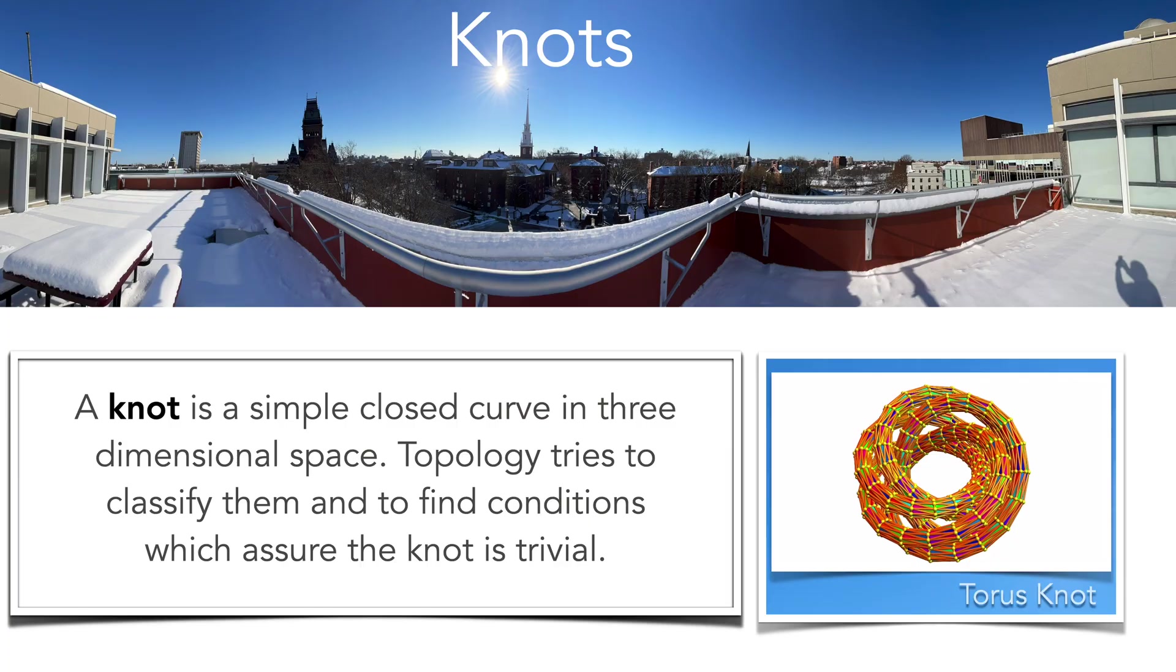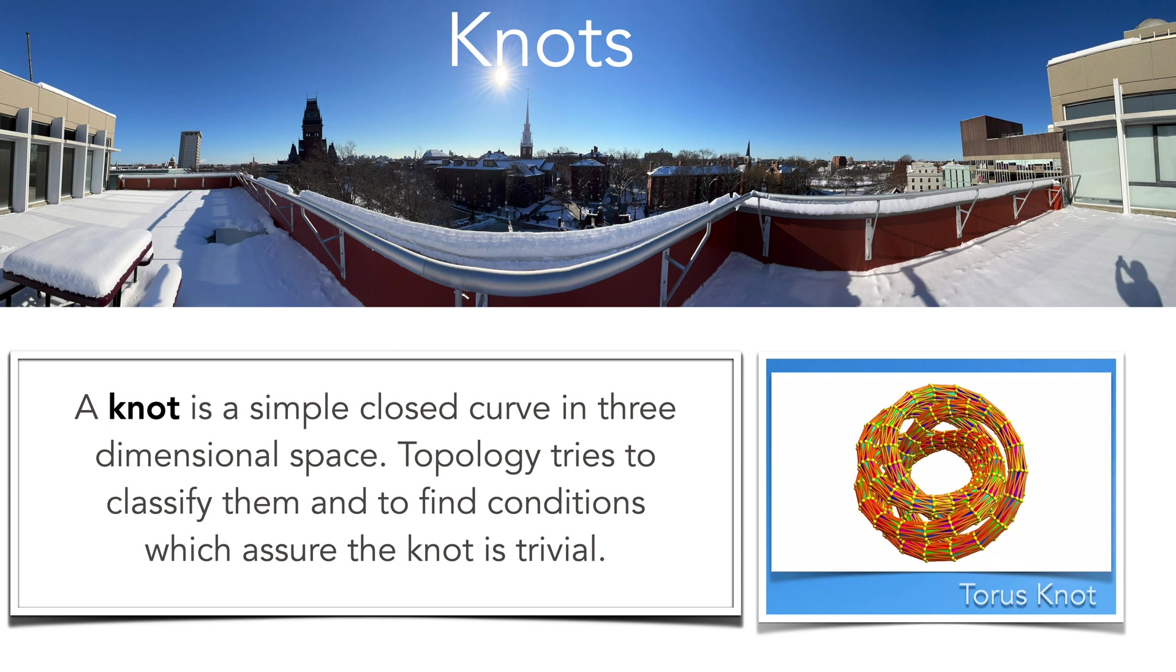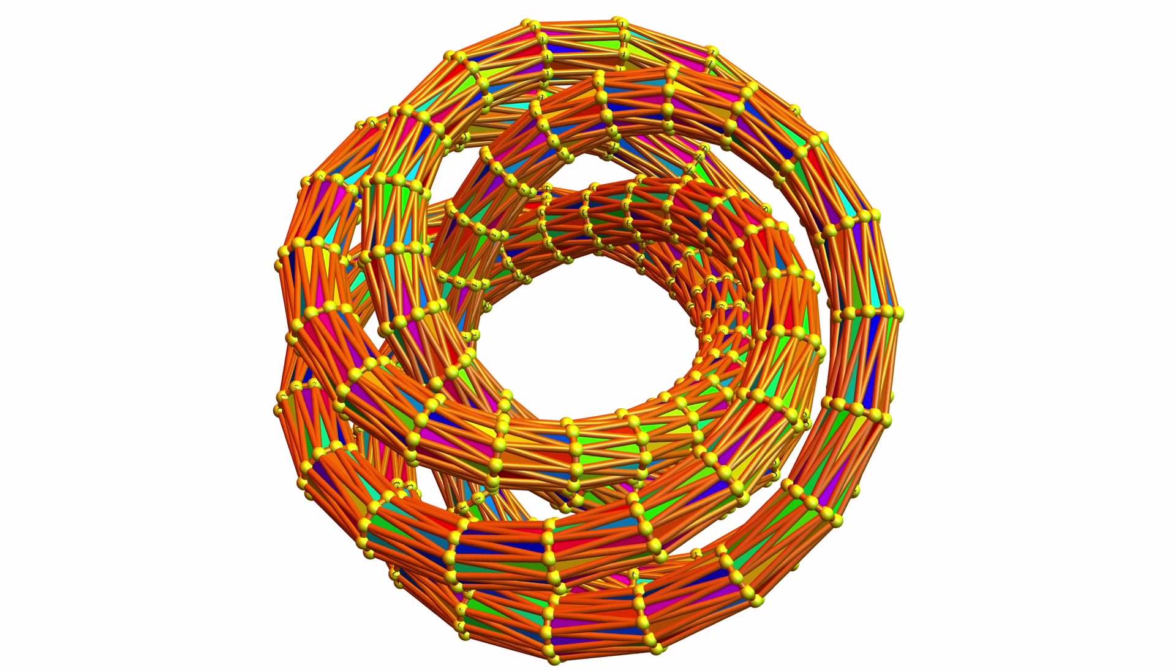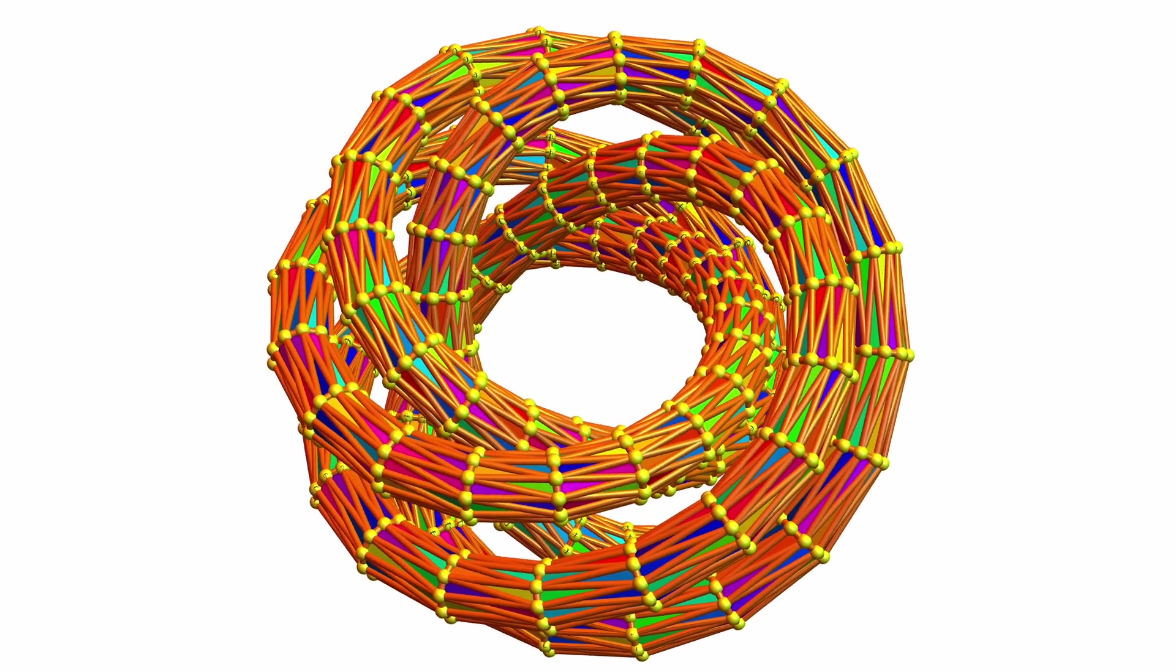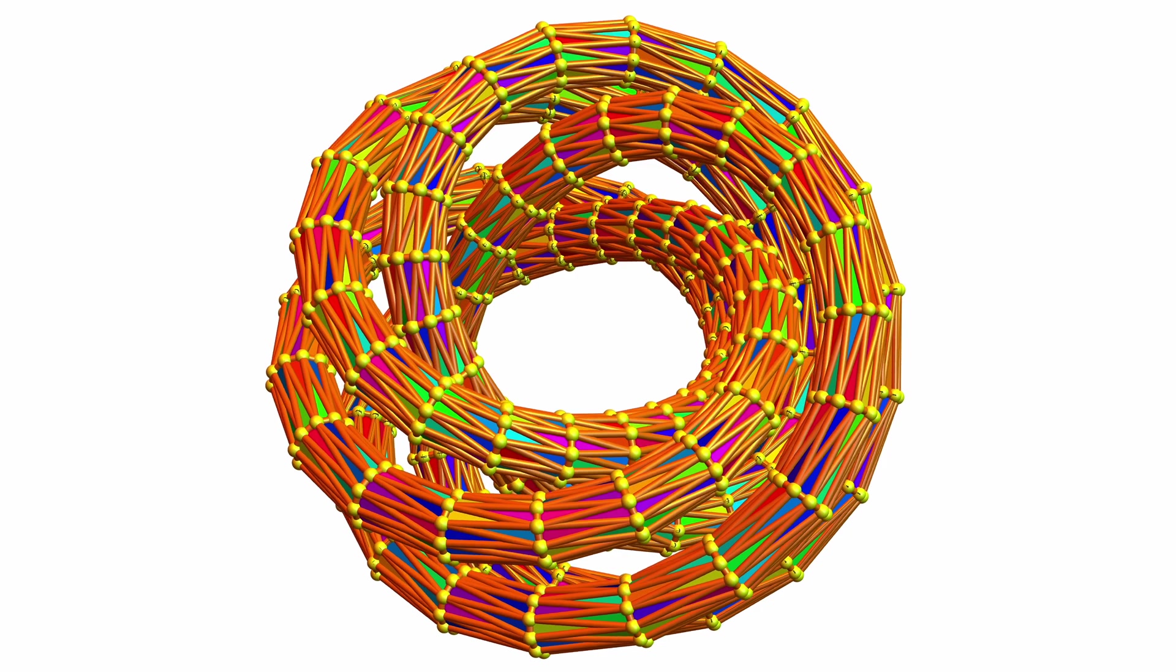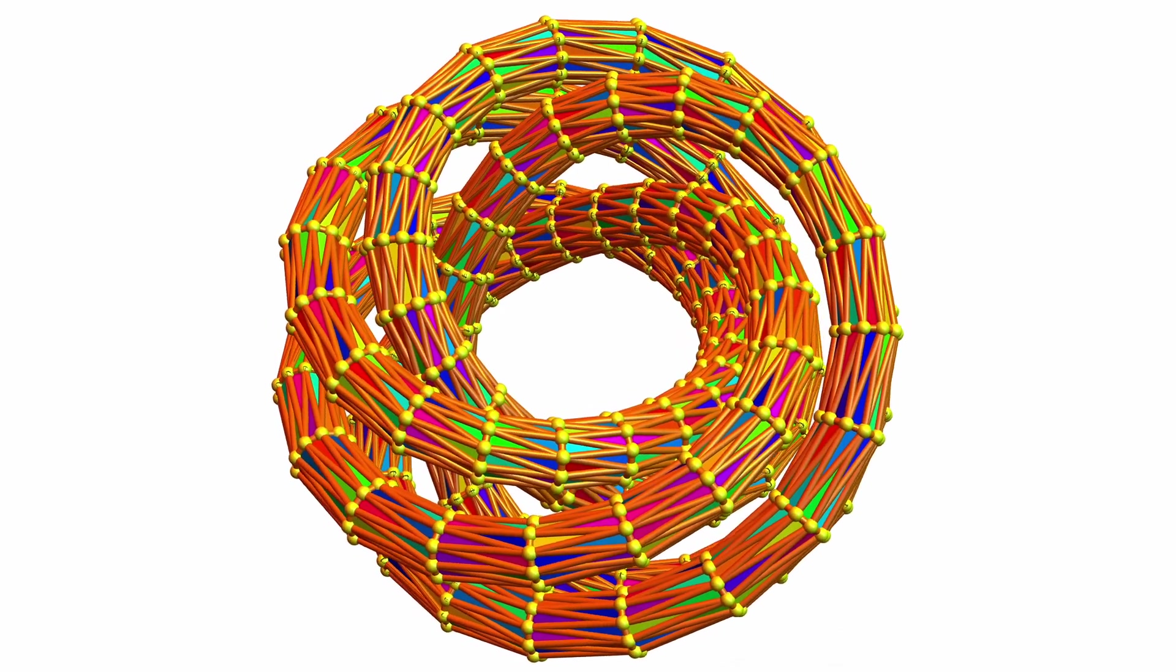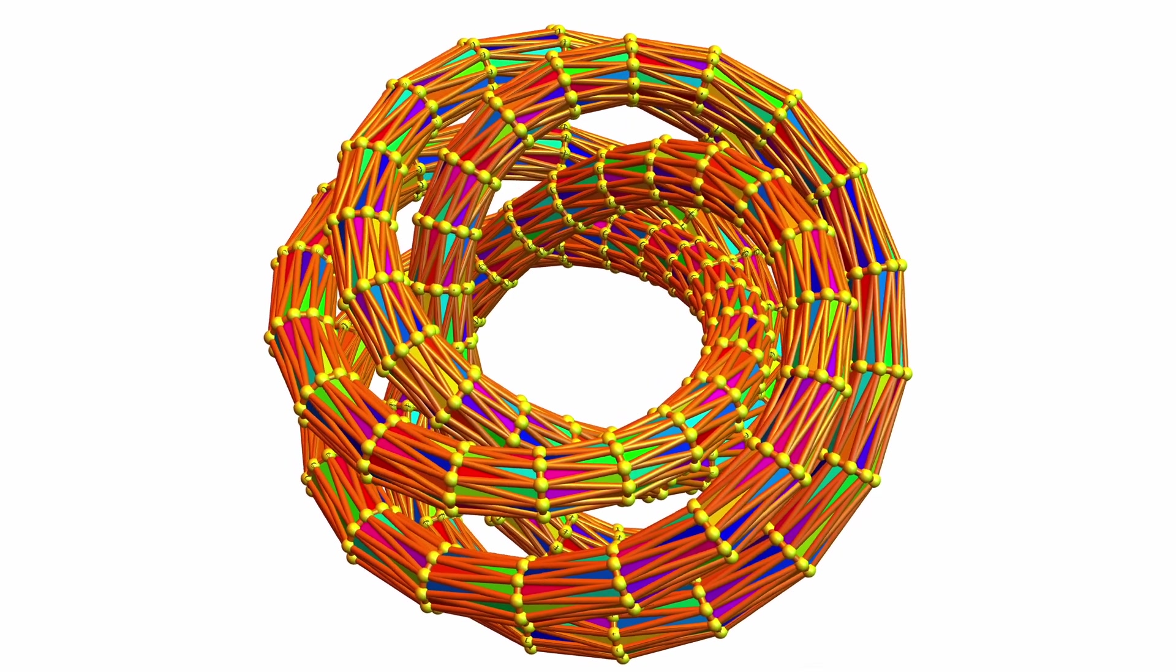Knots are interesting in topology. They are circles embedded in three-dimensional space. One would like to know invariants which make sure that the knot is non-trivial. Here we see a visualization of a torus knot. It's a 4-5 knot. It thickens to make it look nice, but it has just a closed curve originally drawn on a doughnut. The complement of such a knot in the three-dimensional sphere produces interesting examples of manifolds.